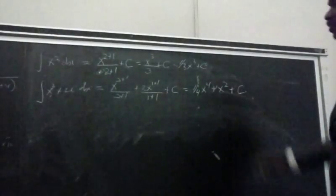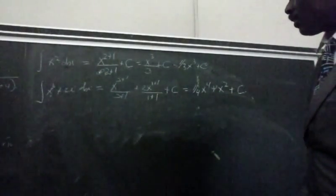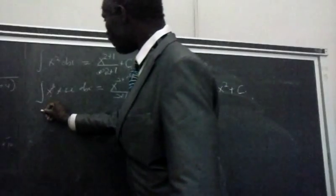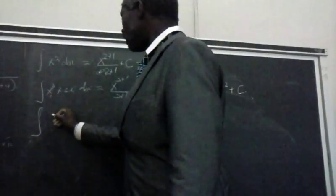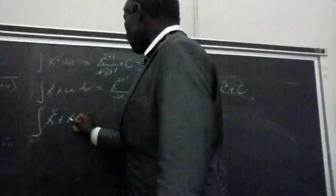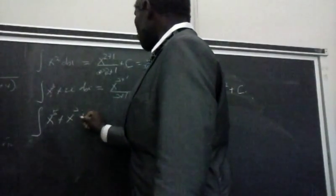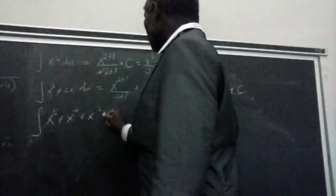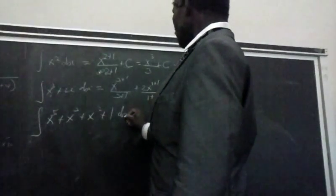This is known as a constant of integration. Alright, let's do another one. We take the integral now of, say, x to the fifth plus x cubed plus x squared plus 1 dx.